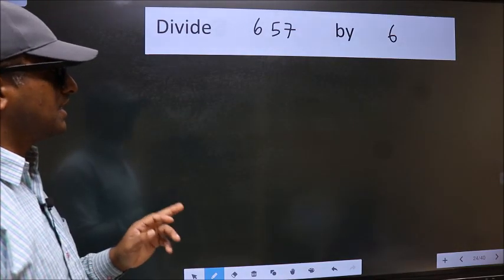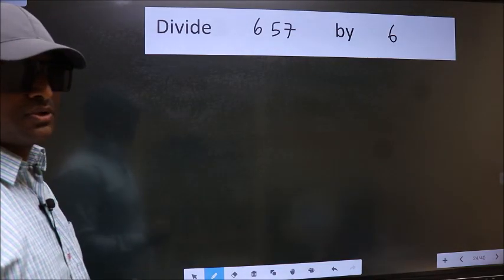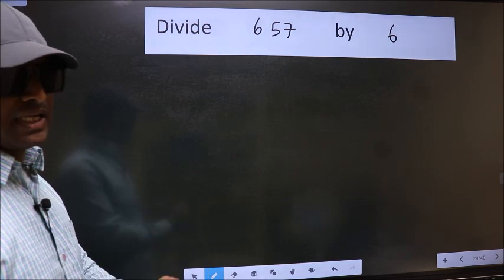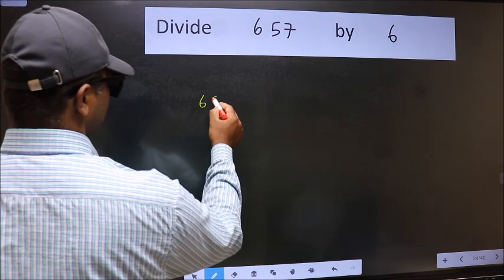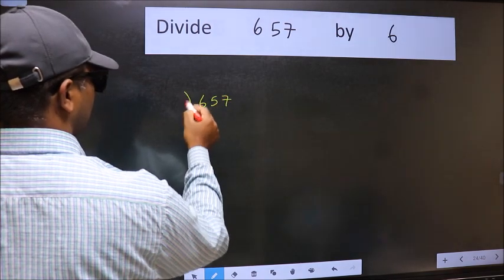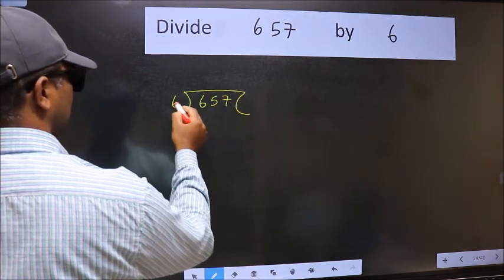Divide 657 by 6. To do this division, we should frame it in this way: 657 here and 6 here.